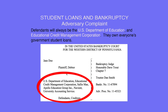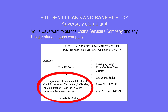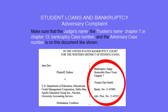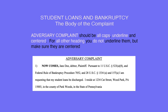For the parts that say defendants and creditors, write the full name of each defendant. Defendants will always be the U.S. Department of Education and Educational Credit Management Corporation — they own everyone's government student loans. You also want to put the Loan Servicer's company and any private student loans company. Make sure the judge's name, the trustee's name, Chapter 7 or Chapter 13 bankruptcy case number, and the adversary case number are on the document. For the heading that says Adversary Complaint, it should be all caps, underlined, and centered. For all other headings, do not underline them but make sure they are centered.